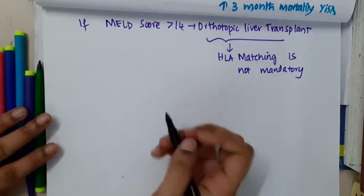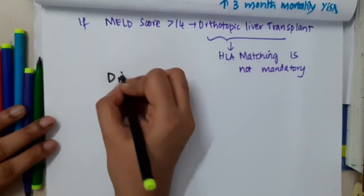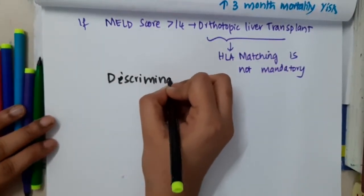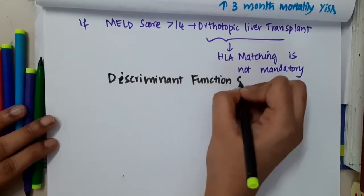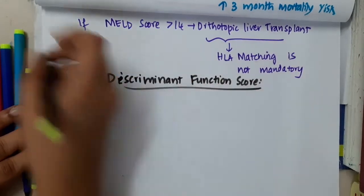Let us now learn some important points about one more score, which is discriminant function score. So what do you see in discriminant function score?